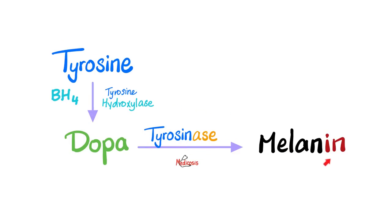What does melanin mean? It came from the Greek melas, which means black. If you have more melanin in your skin, your skin gets darker. If you have less melanin, your skin gets lighter. Is melanin the only pigment responsible for skin color? No. There is melanin, beta-carotene, and hemoglobin — because your skin has blood vessels, and blood vessels contain red blood cells with hemoglobin. You have billions of red blood cells in your body.